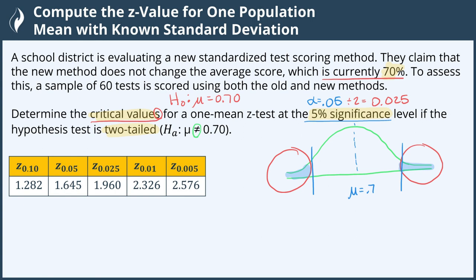We're looking for the z-scores that will give us this cutoff for the critical values, and there are several ways we can do that. We can estimate with the empirical rule, we can use a calculator.